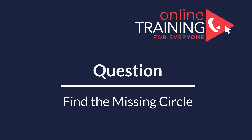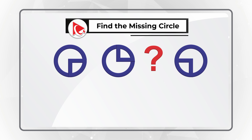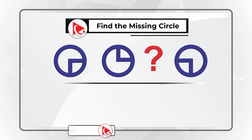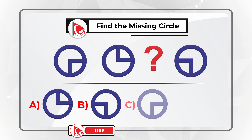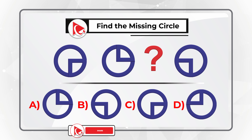Here is a very interesting problem which tests your analytical skills. You are presented with three circles and one circle is missing. You need to select the missing circle out of four possible choices: A, B, C, and D. The answer here is fairly obvious, but please make sure to make your selection.